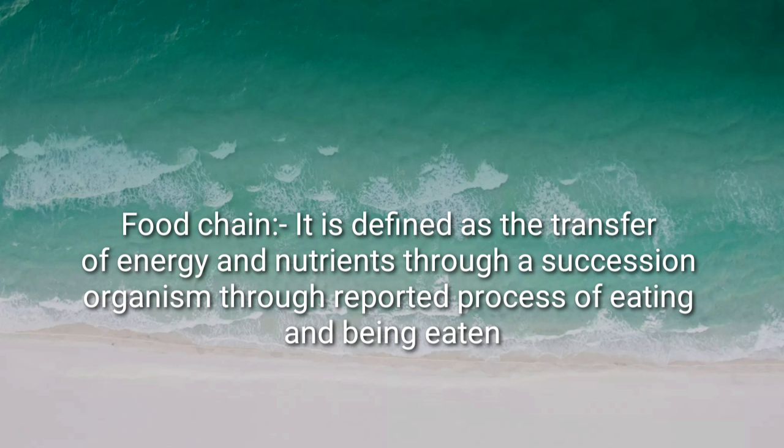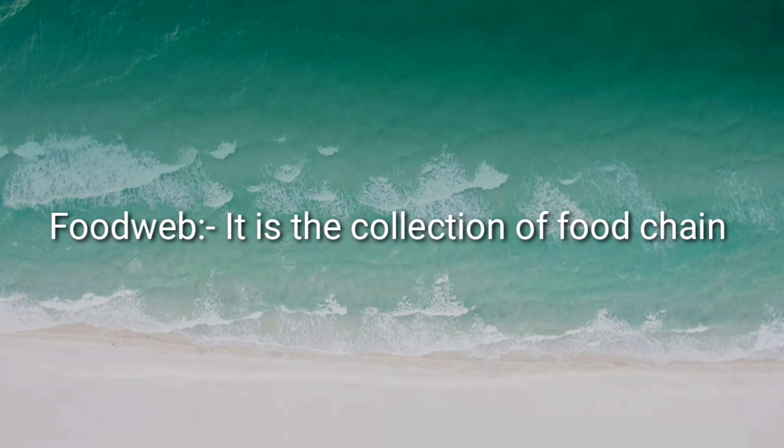Food chain is defined as the transfer of energy and nutrition through a succession of organisms. One organism depends on the other organisms. For example, one animal eats another — that is a food chain. One example is: grasshopper, frog, snake — that is the process of food chain. Next is food web.